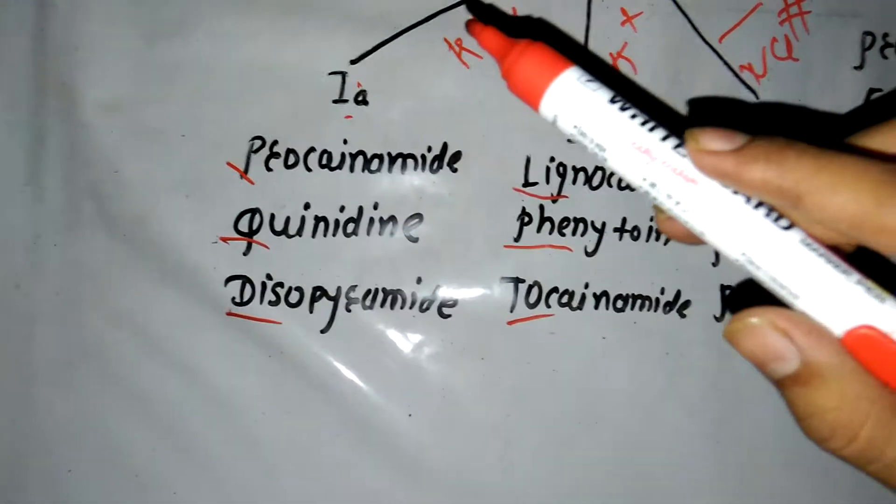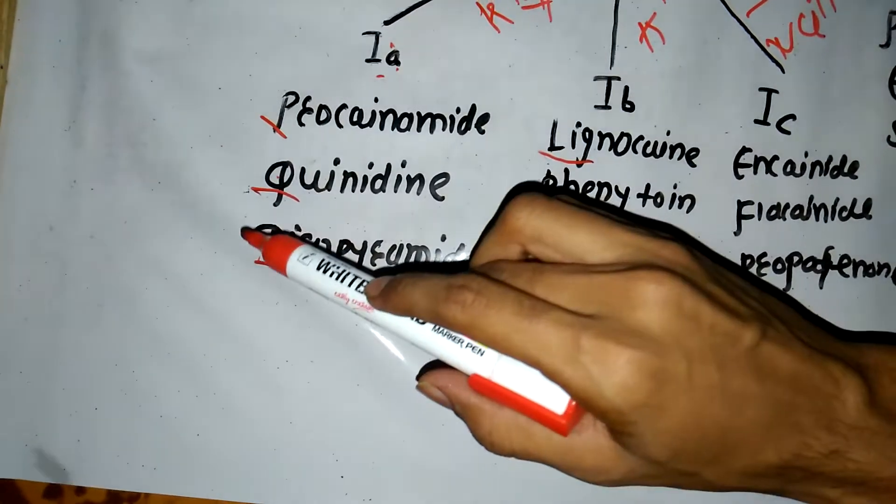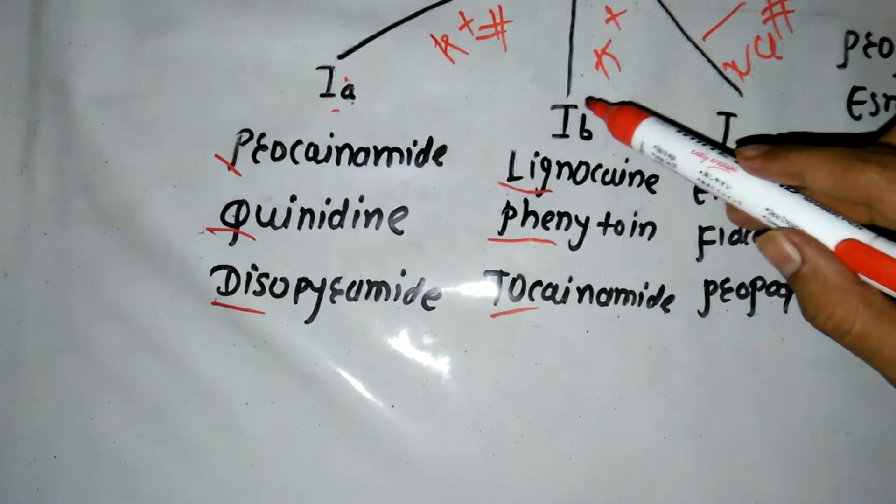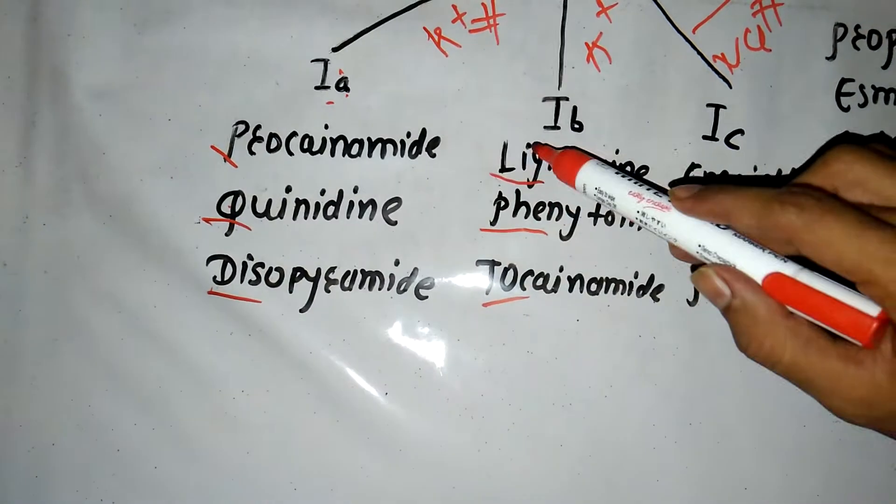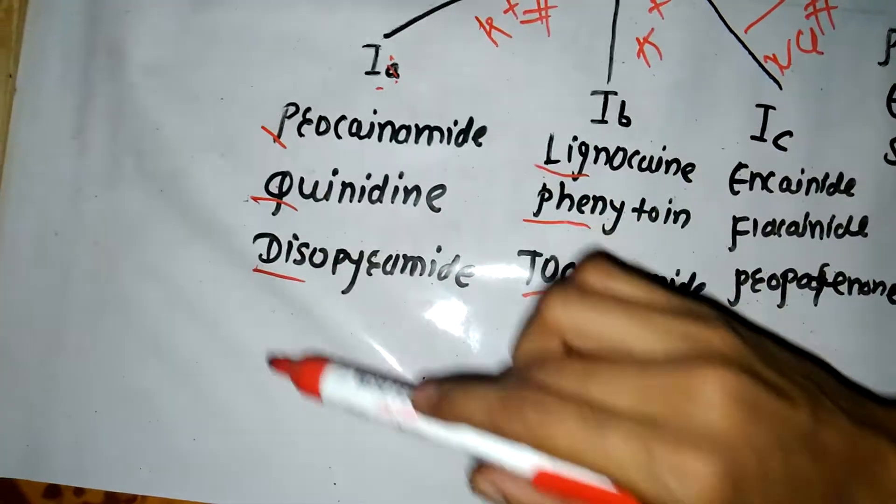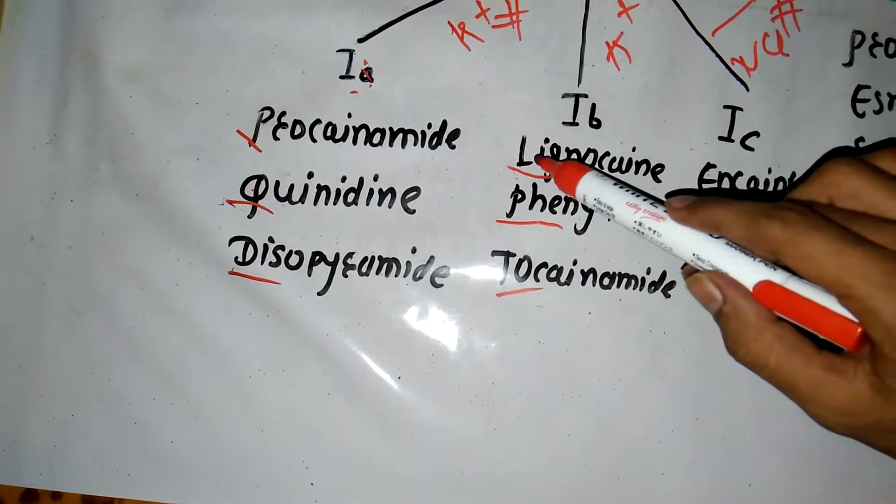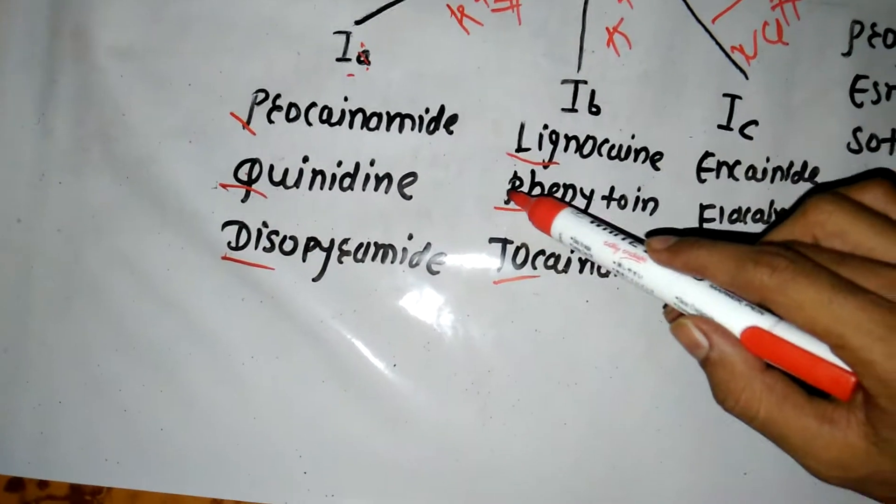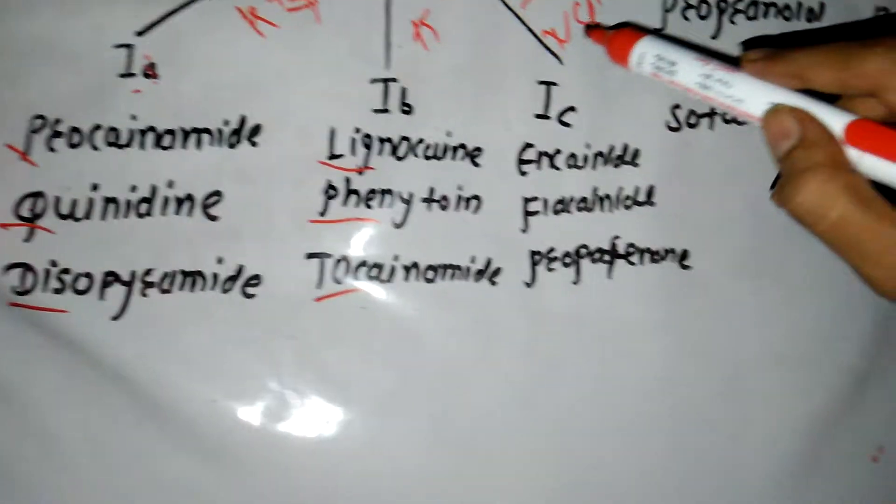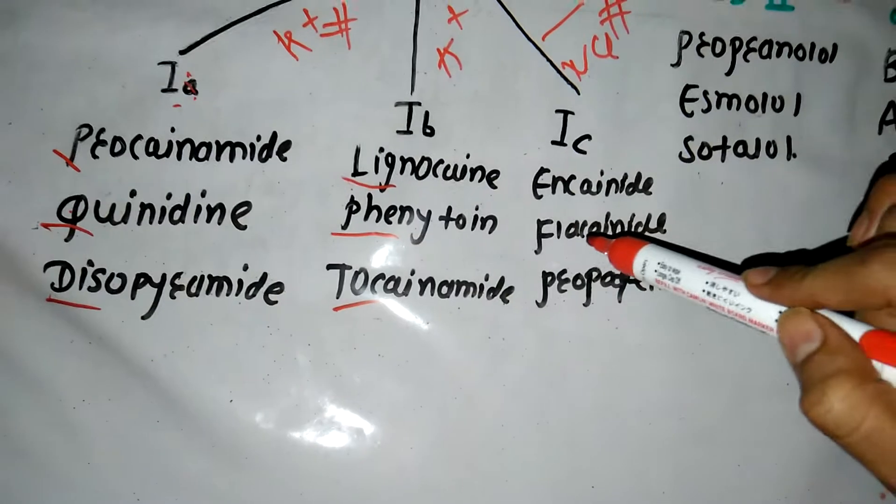P means pehle, which means first. B means baad, which means after. L-I-G means late. Class 1C has encainide, flecainide, and propafenone - these are three important drugs.